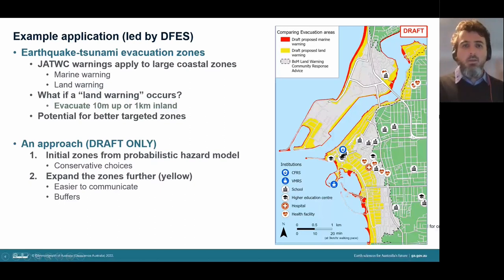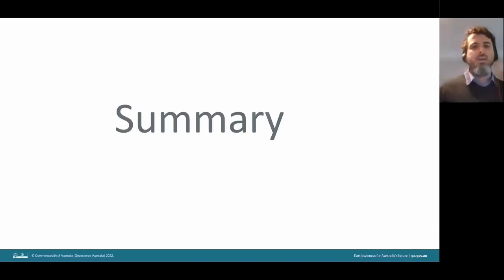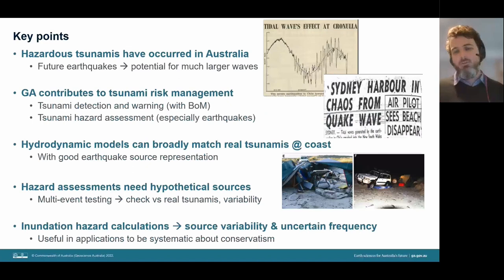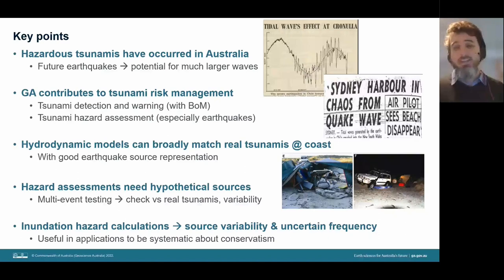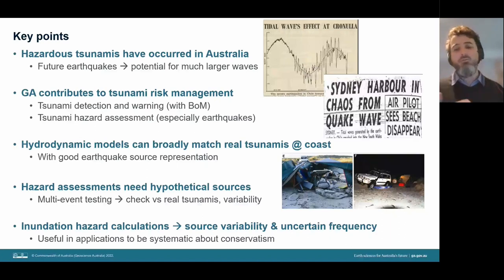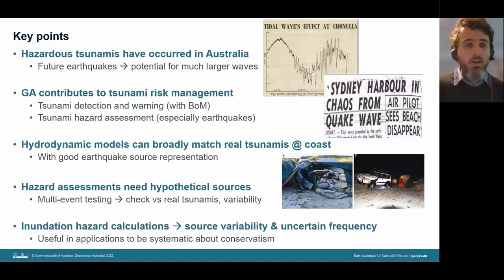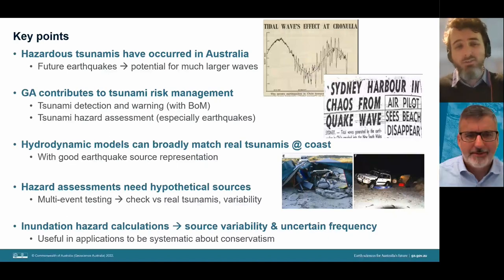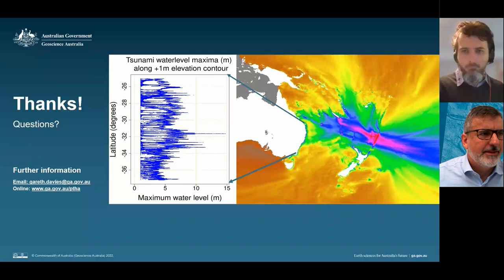In summary: tsunamis have occurred in Australia and been somewhat dangerous. GA contributes to risk management in various ways. Models have been extensively tested and can broadly match real tsunamis. For hazard assessments, hypothetical sources are needed and tested rigorously, and techniques now exist for inundation hazard calculations that account for source variability and uncertainty — useful for being systematic about conservatism. Thank you very much — happy to take questions or be reached by email.